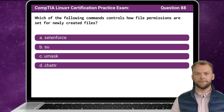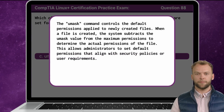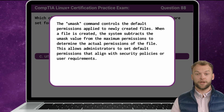Question 88. Which of the following commands controls how file permissions are set for newly created files? The answer is C: UMASK. The UMASK command controls the default permissions applied to newly created files. When a file is created, the system subtracts the UMASK value from the maximum permissions to determine the actual permissions of the file. This allows administrators to set default permissions that align with security policies or user requirements.